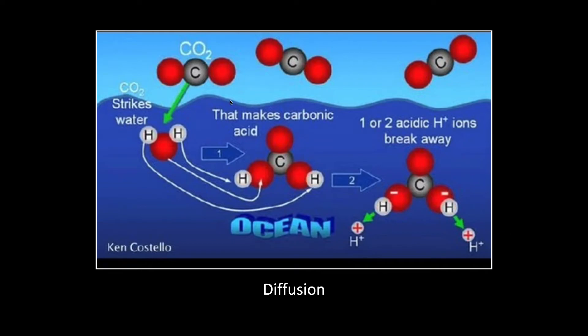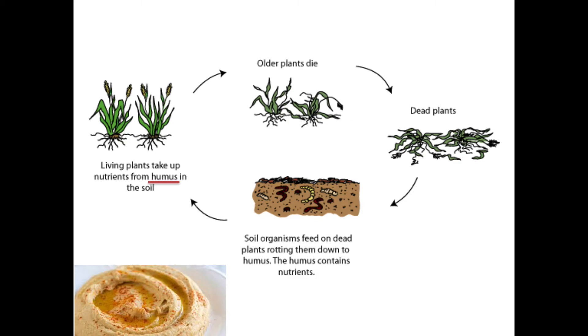Diffusion is quite an important one. At the surface of the sea, as CO2 molecules strike the water they combine to make carbonic acid — just like when raindrops fall through the atmosphere and combine with CO2. It's the same basic idea, but when it happens at the sea surface we call it diffusion.